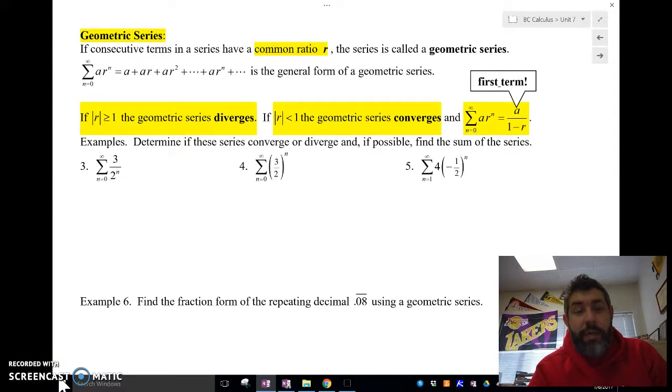So in a geometric series, if r, the number that we have that's raised to our n, if the absolute value of r is greater than or equal to 1, basically not a fraction between negative 1 and 1, the series is going to diverge. And that's because it's going to either get really big or really small and not go to 0. And if the absolute value of r is less than 1, basically a fraction between 1 and negative 1, then the geometric series is going to converge.